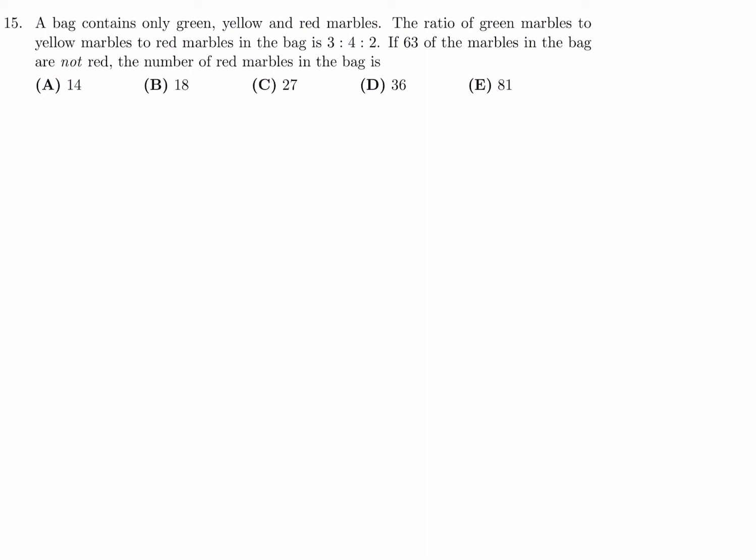A bag contains only yellow, green, and red. The ratio of green, yellow, to red is 3, 4, to 2. If 63 of the marbles in the bag are not red, the number of red marbles is? Green, yellow, red. The ratio is 3, 4, and 2. So I'll just put 3x, 4x, and 2x for some x. And they're saying 63 of the marbles are not red, so these guys is 63.